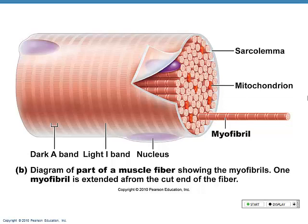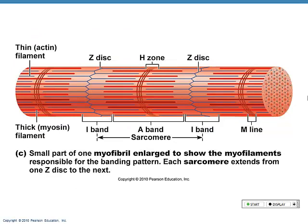And then we have our friends the myofibrils — composed of proteins that allow the cell to be contractile: shorten and lengthen. They are very organized and lined up very well. Because of the way they line up, they create stripes, which is why your cells are called striated.